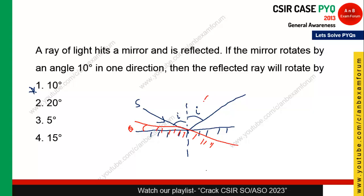This normal will also move by angle theta. So now the total angle of incidence becomes I plus theta. Let's reflect the ray. This will be reflected here, so with respect to the new normal, this will become I plus theta according to the law of reflection. But we need to find x — how much the reflected ray will be rotated. This total is I plus theta.